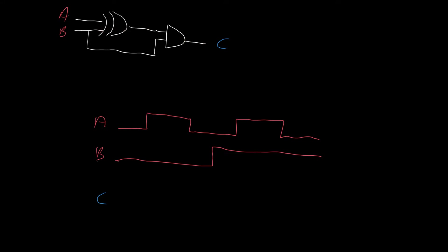We're given a combinational circuit here, and we're given the input waveforms, so time goes across here from left to right. A is initially 0, then it becomes 1, falls back to 0, etc. Same with B — B is initially 0, then it rises to 1.